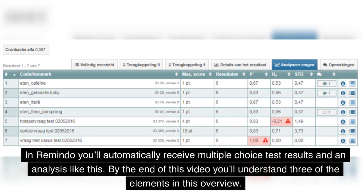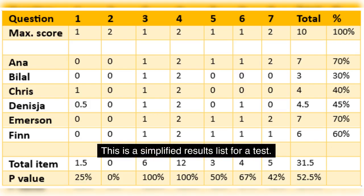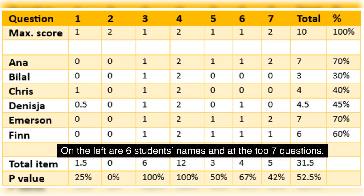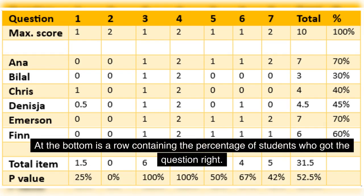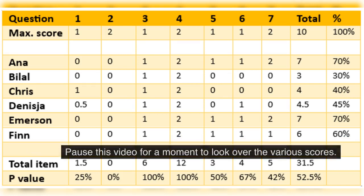In Remindo you will automatically receive multiple choice test results and an analysis like this. By the end of the video you'll understand three of the elements in this overview. This is the simplified results list for a test. On the left are six students' names and at the top seven questions. In the right column you see the total scores of the students. At the bottom is a row containing the percentage of students who got the question right. Pause this video for a moment if you'd like to look over the various results and get a feel for this overview.